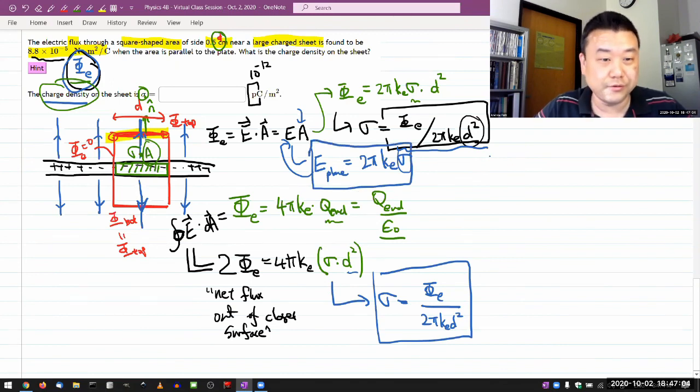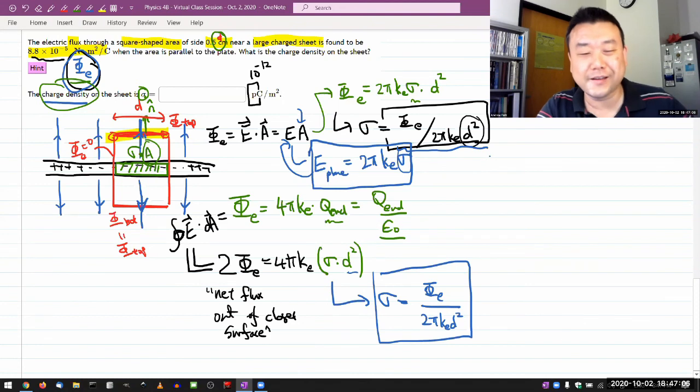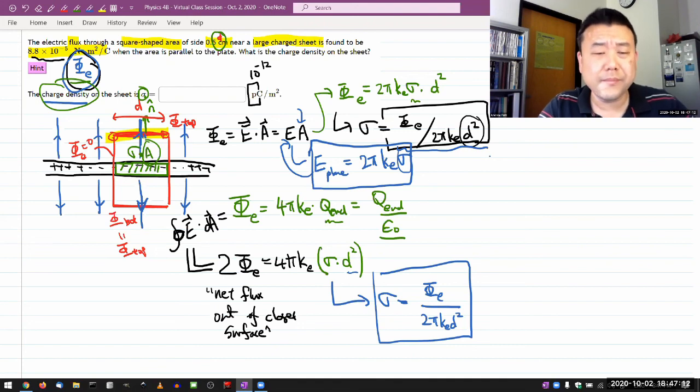Instead, it involved you basically knowing how to derive the electric field expression if you had to. So that's our second way to do it. I think both methods, once you know what you're doing, involve basically the same amount of effort. So that's how we're doing.